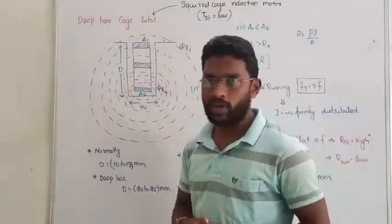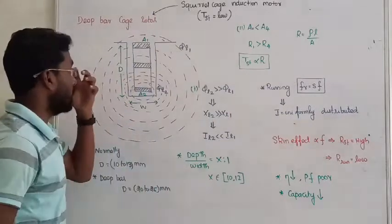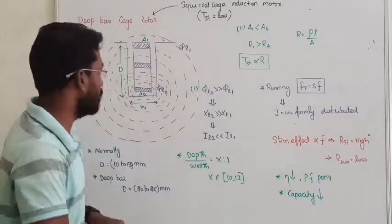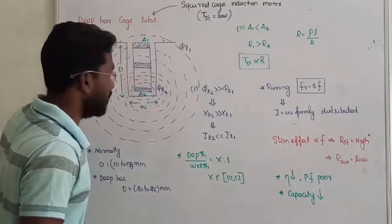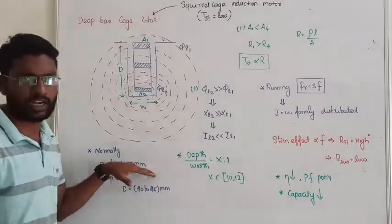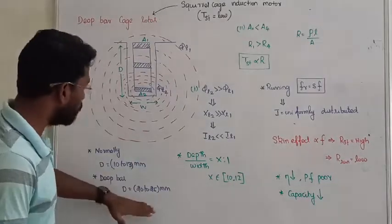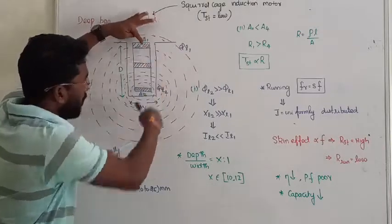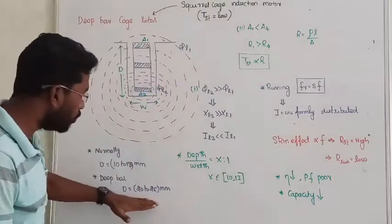What we are doing is, in rotor, we locate the bars or the slots or the conductors. We increase the depth of the bar. Usually, in normal cases, we have certain dimensions. We increase this from 10 to 25 millimeters.